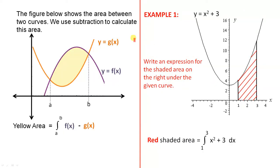The figure below shows the area between two curves. We use subtraction to calculate this area. This purple curve here, I've called it y equals f(x). This orange curve here is y equals g(x), so they're two functions. In between them, we have this yellow area.